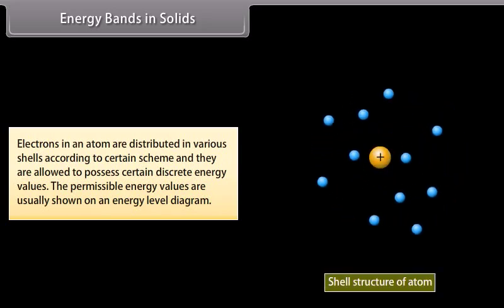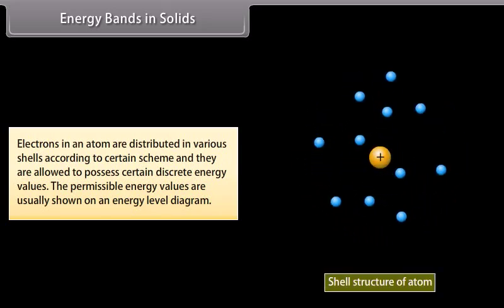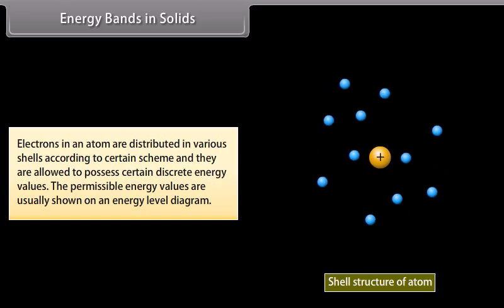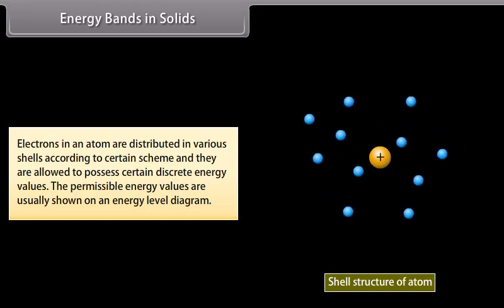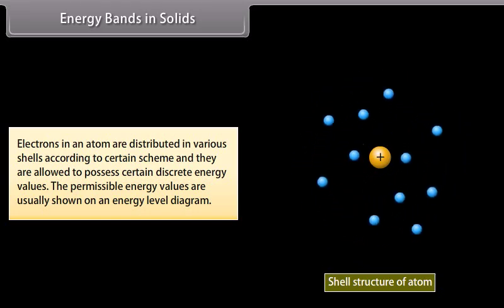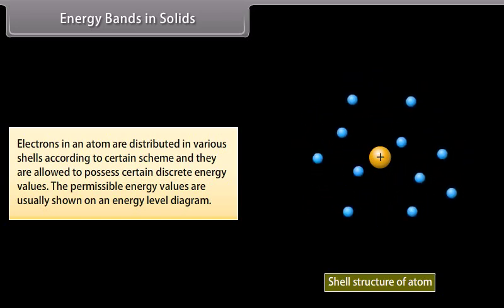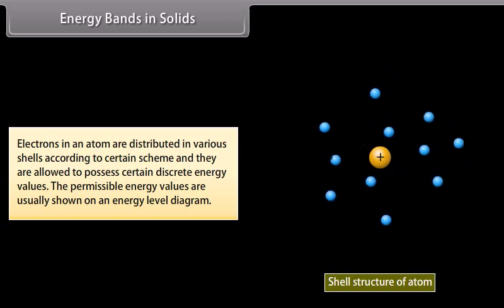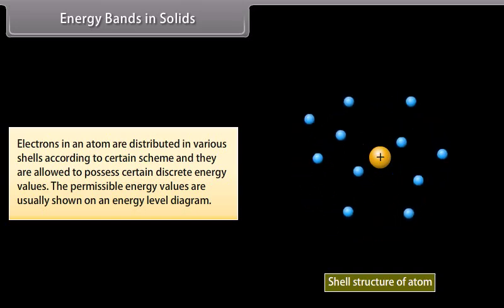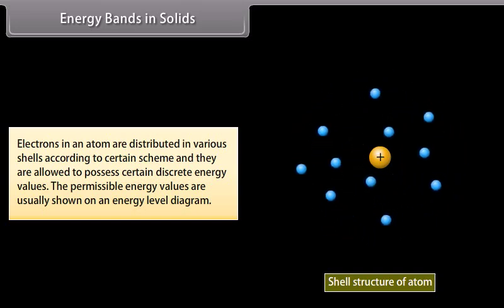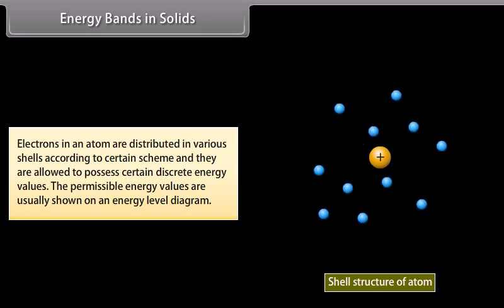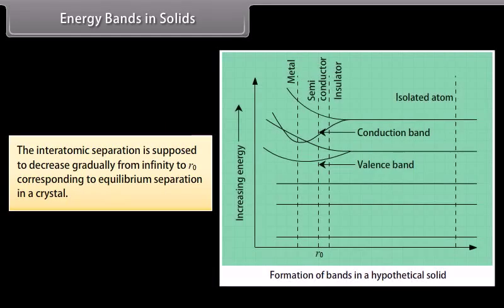Energy bands in solids: Electrons in an atom are distributed in various shells according to a certain scheme and are allowed to possess certain discrete energy values. The permissible energy values are usually shown on an energy level diagram. We consider the formation of bands for the energy level normally occupied by the valence electrons and the next level above it. The interatomic separation is supposed to decrease gradually from infinity to R, corresponding to equilibrium separation in a crystal.